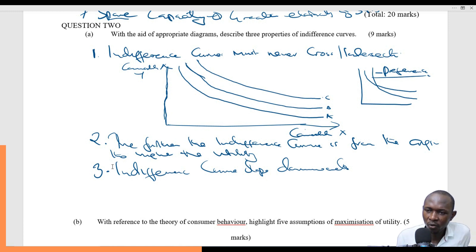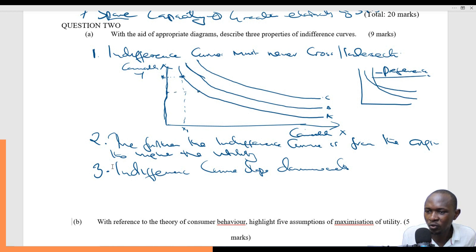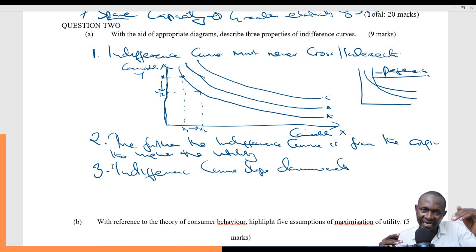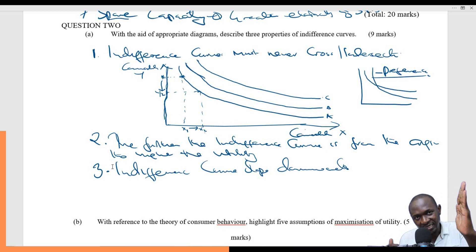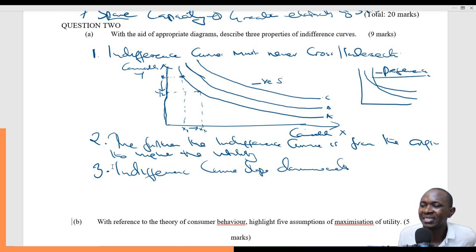At this point, we are consuming Y1 of commodity Y and X1 of commodity X. But at another level, we are consuming a different quantity of Y and a different quantity of X. So when we decrease consumption of one, we increase consumption of the other. There is that element of trade-off — when we decrease the consumption of one, we increase the consumption of the other. That is what creates this negative slope.